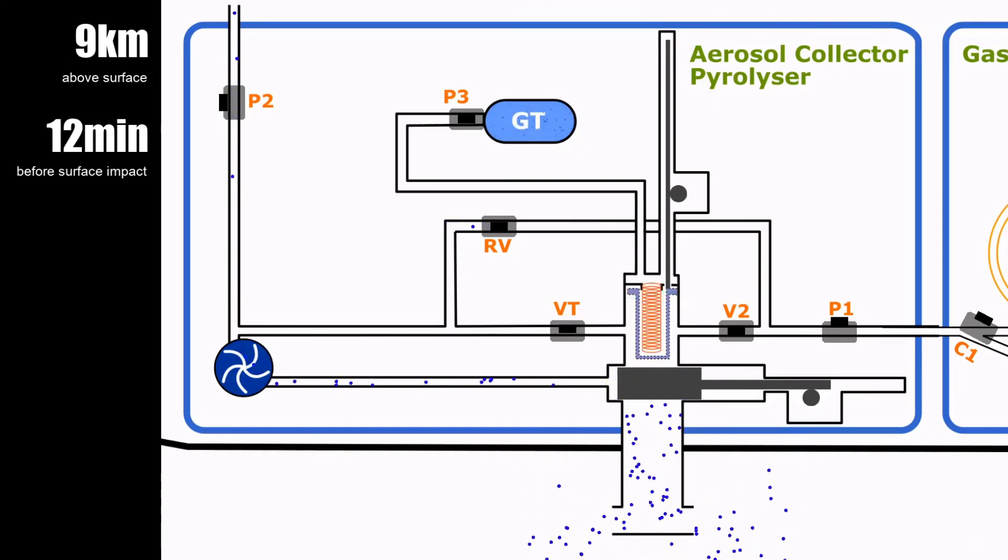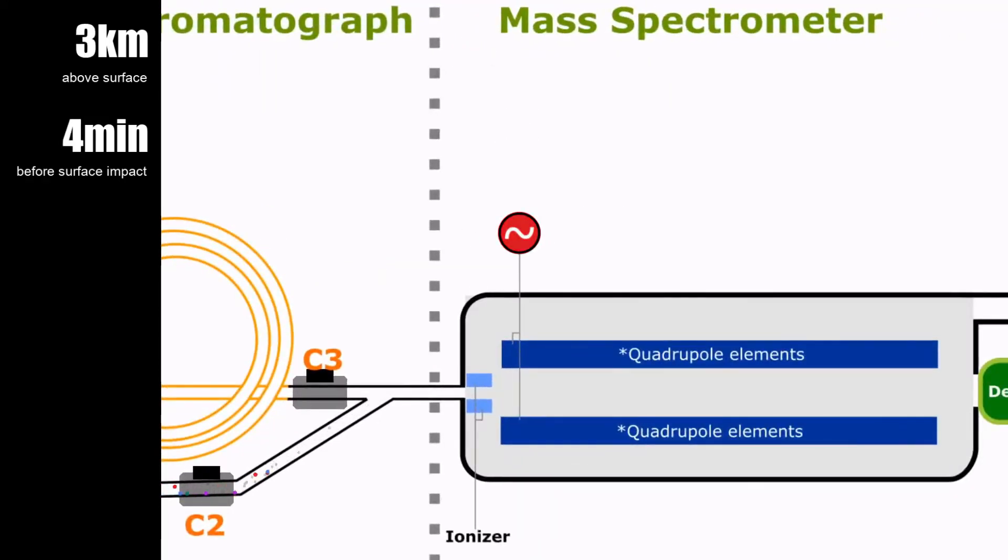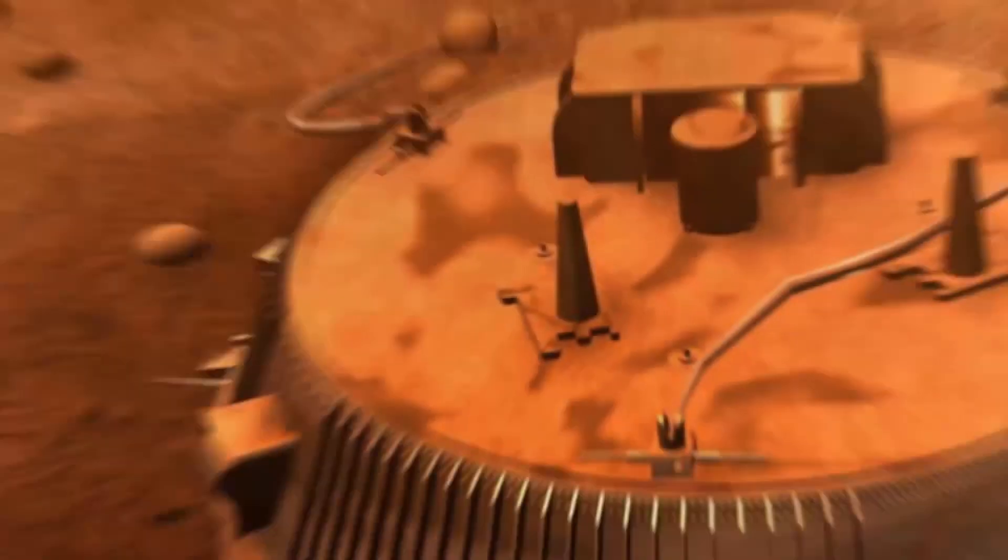12 minutes before surface impact, the gas product is transferred to the GCMS. Since the probe has less than 12 minutes before impact and the gas chromatograph takes about 10 minutes, it is skipped by closing valve C1, sending the gas product directly to the mass spectrometer for analysis. 2 minutes before surface impact, the ACP is shut off. Final ACP data from the mass spectrometer has been collected, and this concludes the aerosol analysis of Titan's atmosphere.